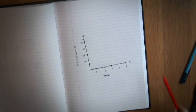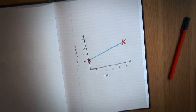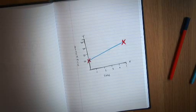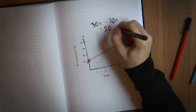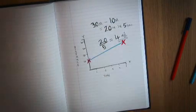So if your position on the graph has changed from 10 meters to 30 meters in five seconds, your position has changed by 30 minus 10—that's 20 meters—in five seconds. So you're going at 20 over 5, that's 4 meters per second.